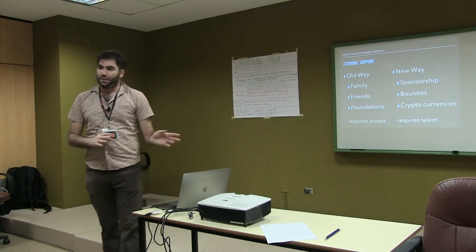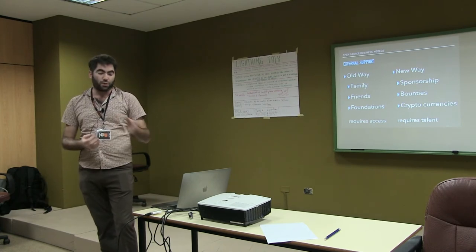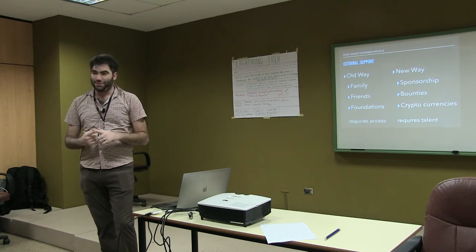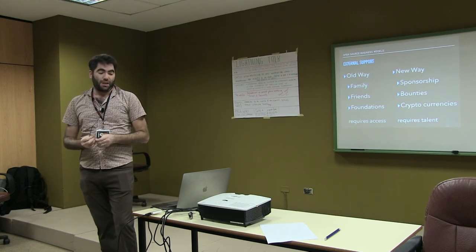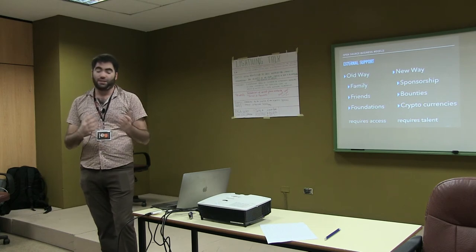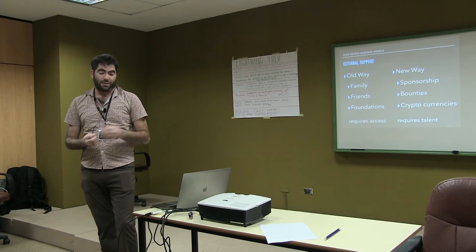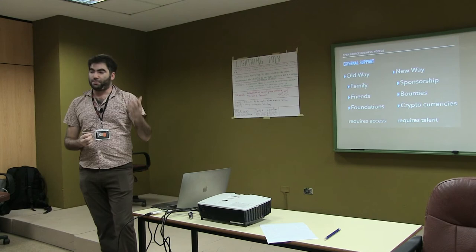A third way of doing open source software development is with external support. The old way of doing this is to ask people for money — your family, your friends, or foundations — and all of those require access to people with money, which can be very limiting. The new way of doing that is by finding sponsors: corporations or smaller nonprofits. There are also people who have done bug or feature bounties, where you say you want a particular thing built and anyone who can build it will get a certain amount of money.